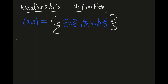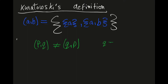We can check whether this definition is correct or not. If this definition is correct, then it should preserve the defining property of an ordered pair — namely that (p, q) is not the same as (q, p), given that q is not equal to p.